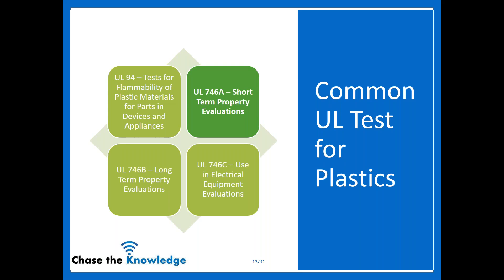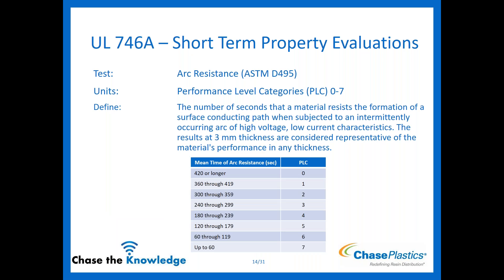Now we're going to talk about UL 746A — your short-term property evaluations. A lot of these tests that you'll see on a yellow card for short-term evaluations are rated using Performance Level Categories, or PLCs. Instead of having all different units and measurements across the yellow card, they simply give it a zero through seven, zero through five, or zero through four PLC rating. It just makes it easier. I do have the values listed out in the presentation, so it's a good reference to go back and check what each PLC rating means.